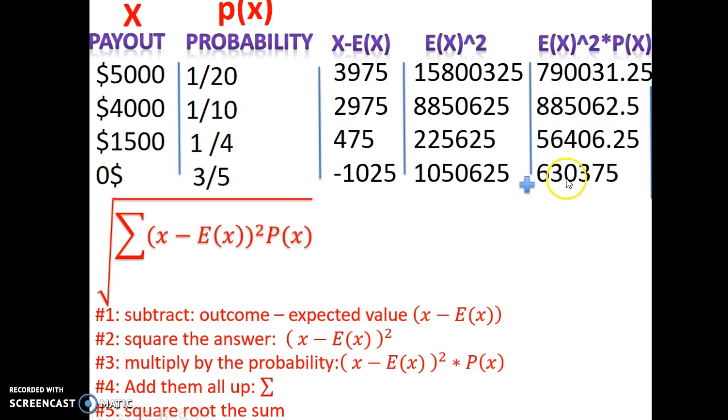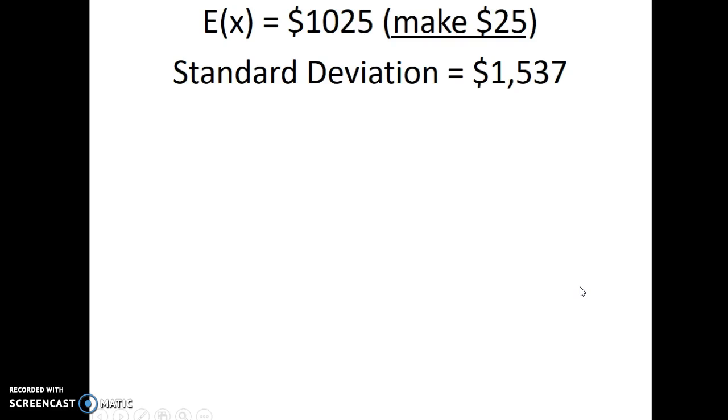Now we're going to multiply the probabilities by p(x). So I'm going to take all of these values and multiply it by each of their probability. And that's going to give me these four values. And now I'm going to add them all up. And last step, I'm going to take the square root. So I end up with a standard deviation of 1,536.84, which we'll round off to 1,537.